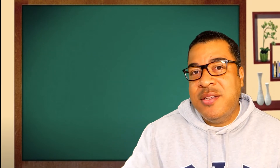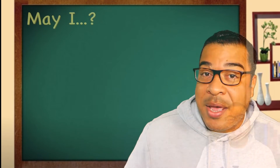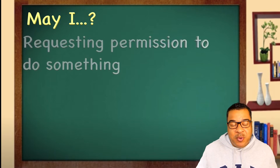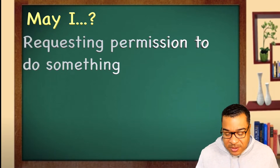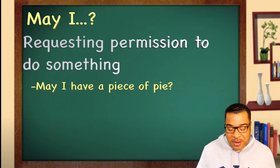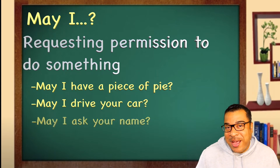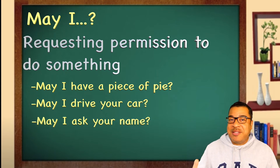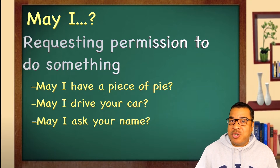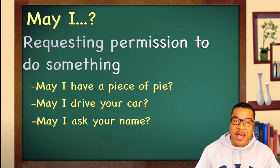But there is a huge difference between the two. First, let's start with 'may I.' We all know that 'may I' is basically requesting permission to do something. For example: 'May I have a piece of pie?' 'May I drive your car?' 'May I ask your name?' In these three questions, you are asking permission to do something.